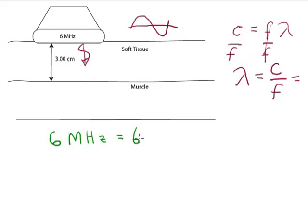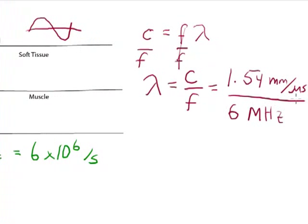That's equal to 6 times 10 to the 6th per second. Now what I'd like to have, what would be nice would be if I had per microsecond on the bottom of this fraction, so that I could cancel the per microsecond up on the top.